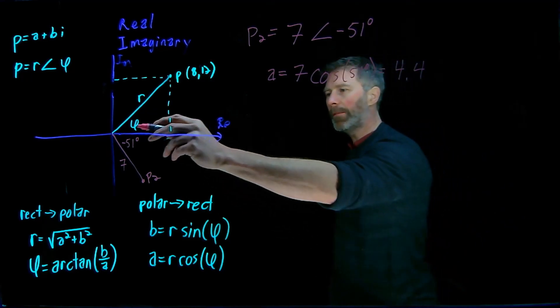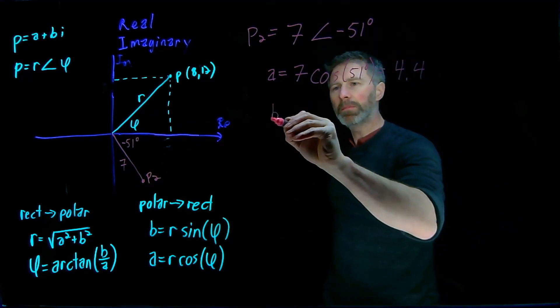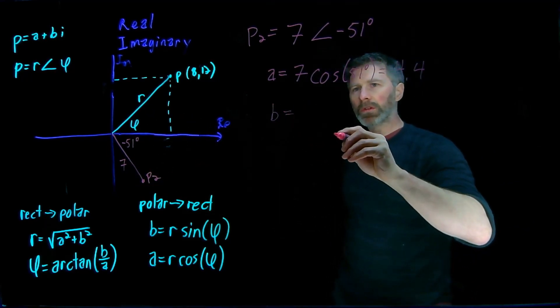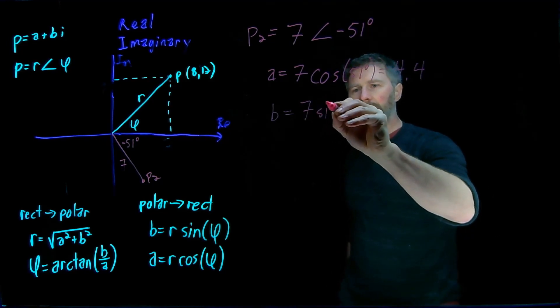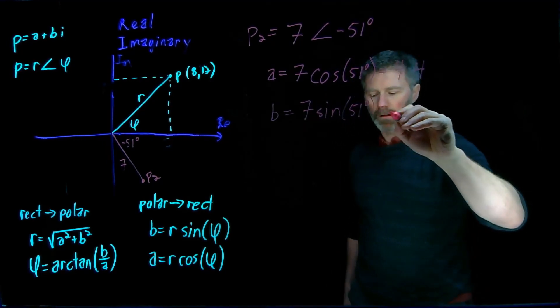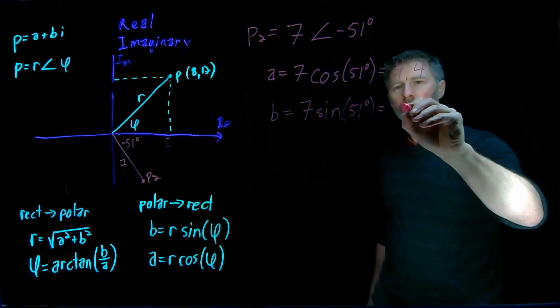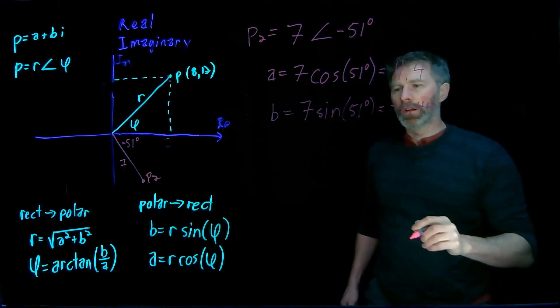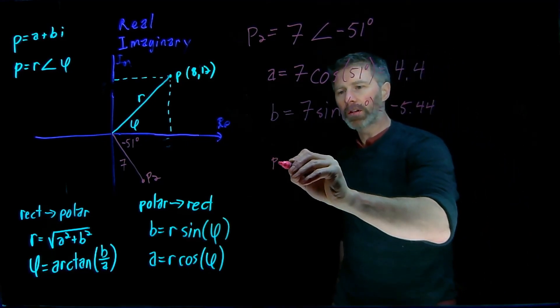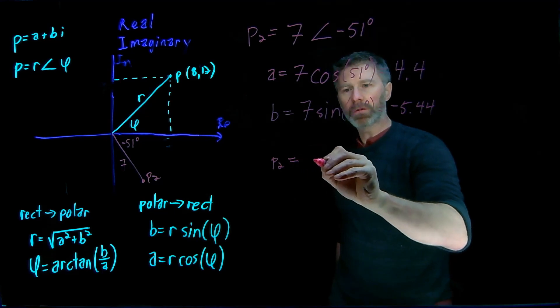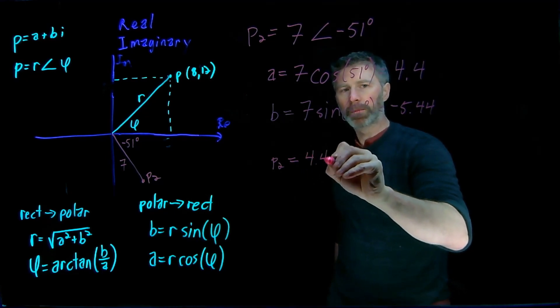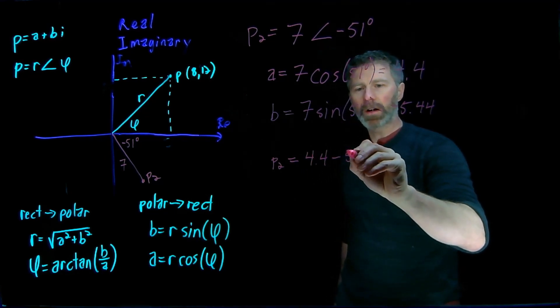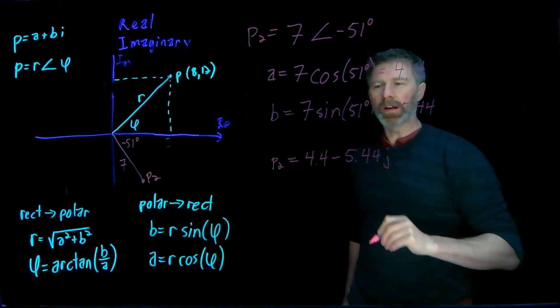And the imaginary part of that line, B, is equal to 7 sine 51 degrees. And that works out to negative 5.44. So P2 in rectangular coordinates, then, is equal to 4.4 minus 5.44 j.